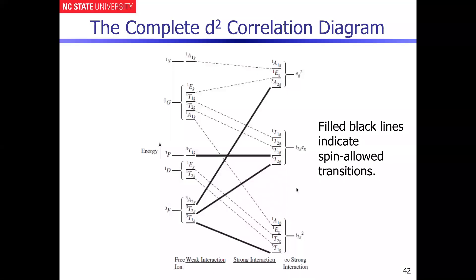We ended the last discussion with this correlation diagram, and I mentioned that what we want to do is use Tanabe-Sugano diagrams to describe and quantify the nature of electronic transitions in transition metal complexes.